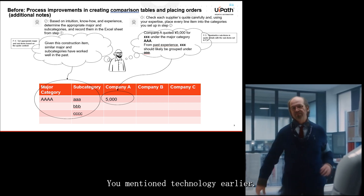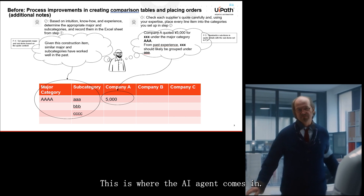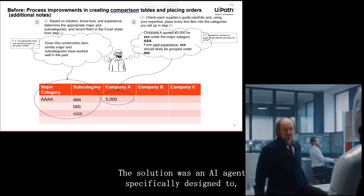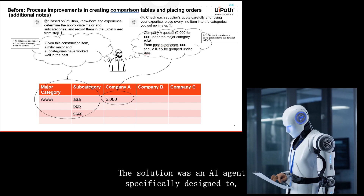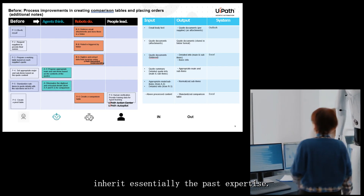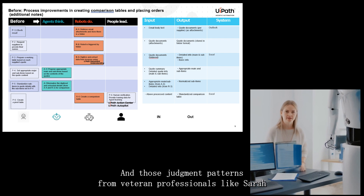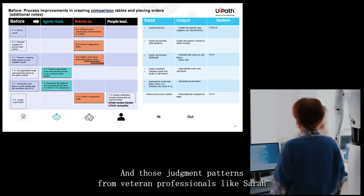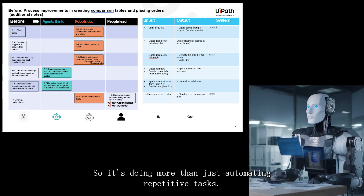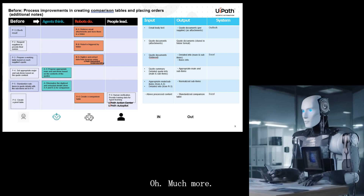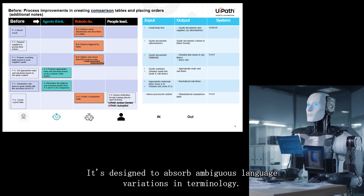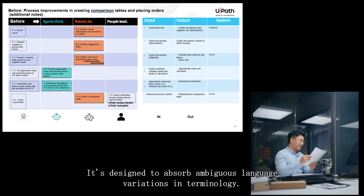The solution was an AI agent specifically designed to inherit the past expertise and judgment patterns from veteran professionals like Sarah. This agent isn't just ticking boxes — it's designed to absorb ambiguous language and variations in terminology, all the messy real-world stuff in those quotes, and output clean, structured data in a reusable format that business operations can actually use.